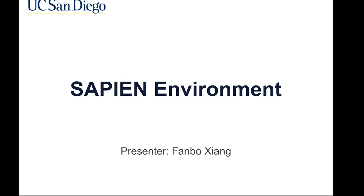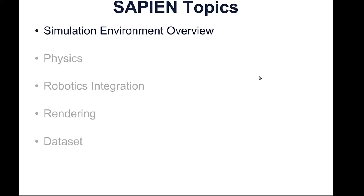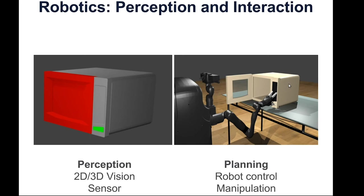Hello everyone. My name is Fanbo Xiang, and I will be presenting our work, the SAPIEN environment, which is a robotic learning platform for doing robotic tasks and learning from those environments. Let's start with an overview of this simulation environment. Zhao has just introduced the interaction problems in robotics — we need to solve perception and planning problems. Perception includes 2D and 3D vision and the processing of all kinds of sensor data input, which basically helps us make sense of the world. We also need to plan to control the robot and manipulate objects in this world.